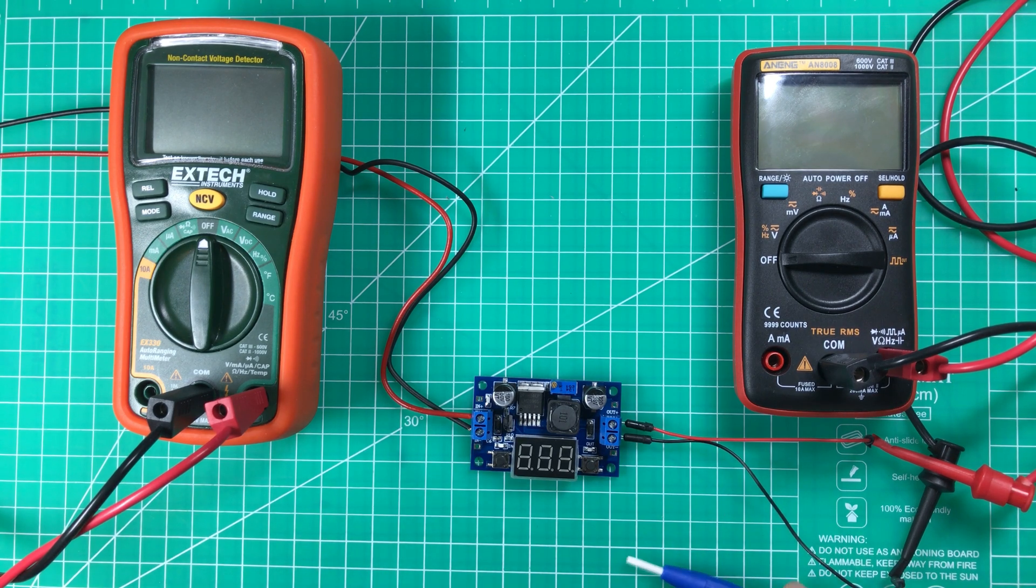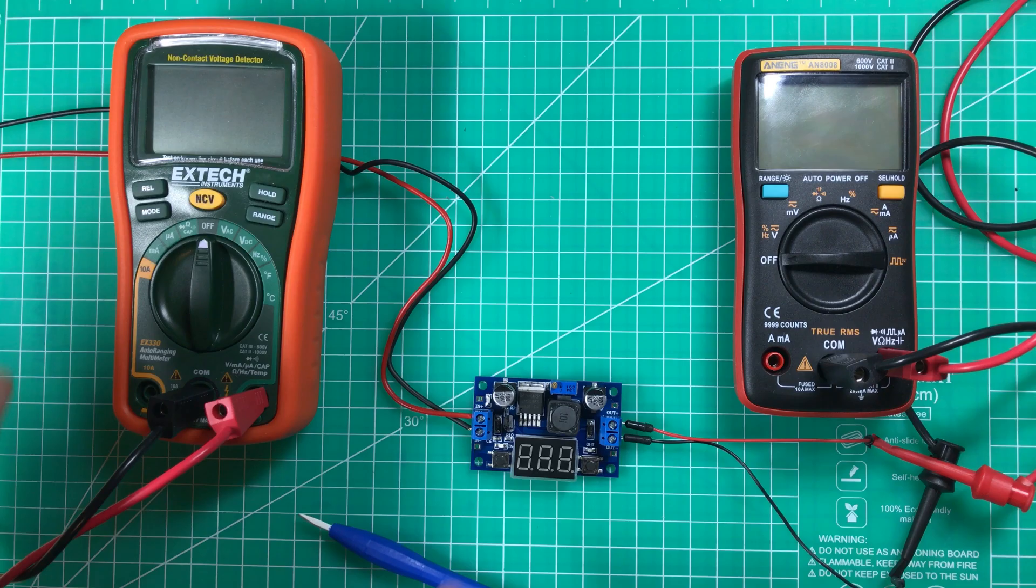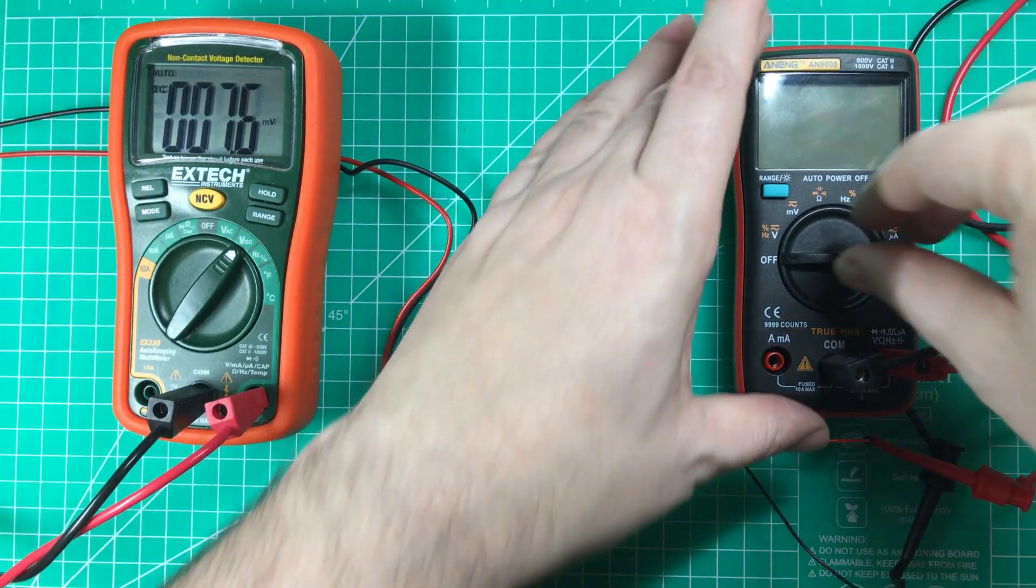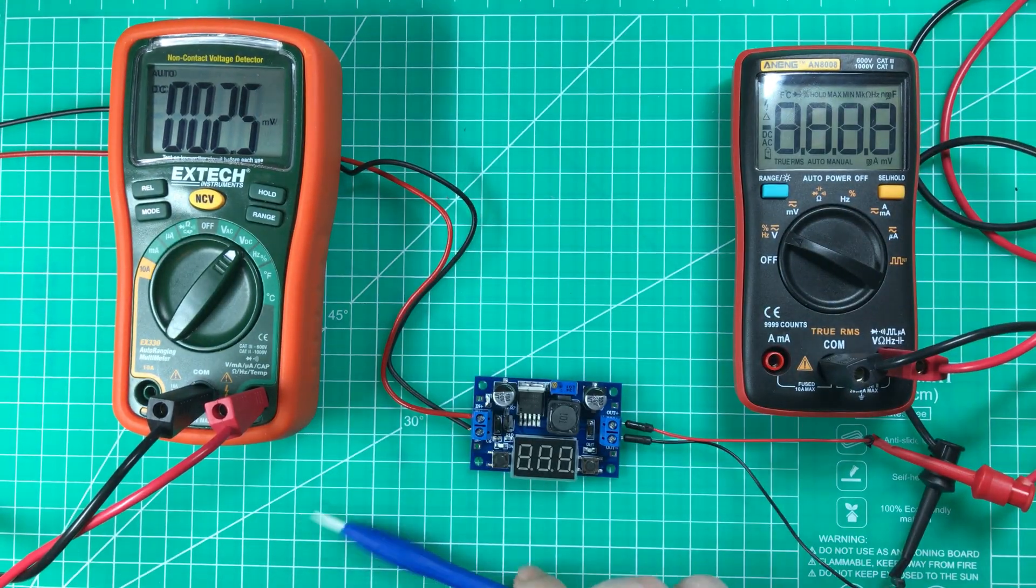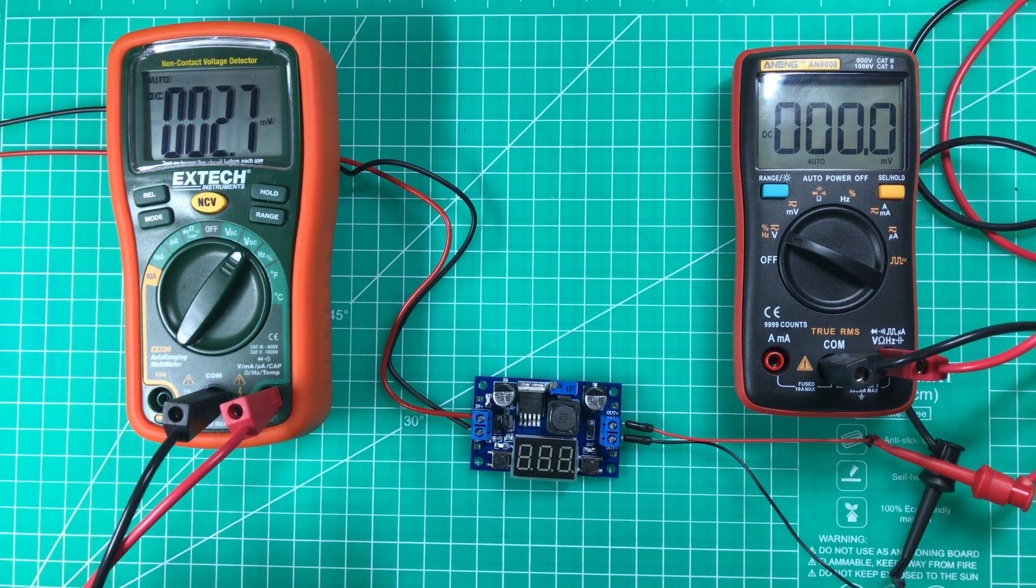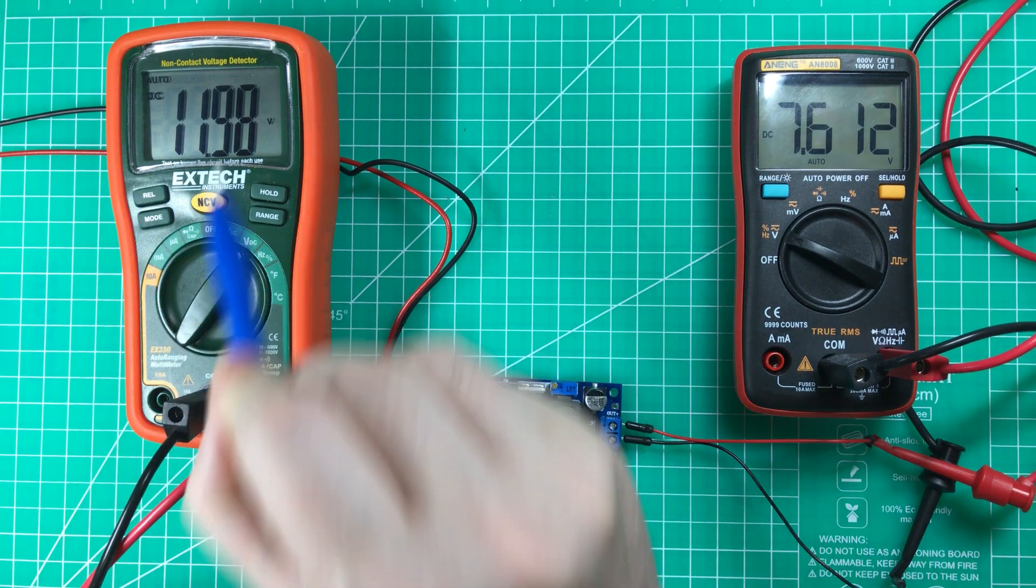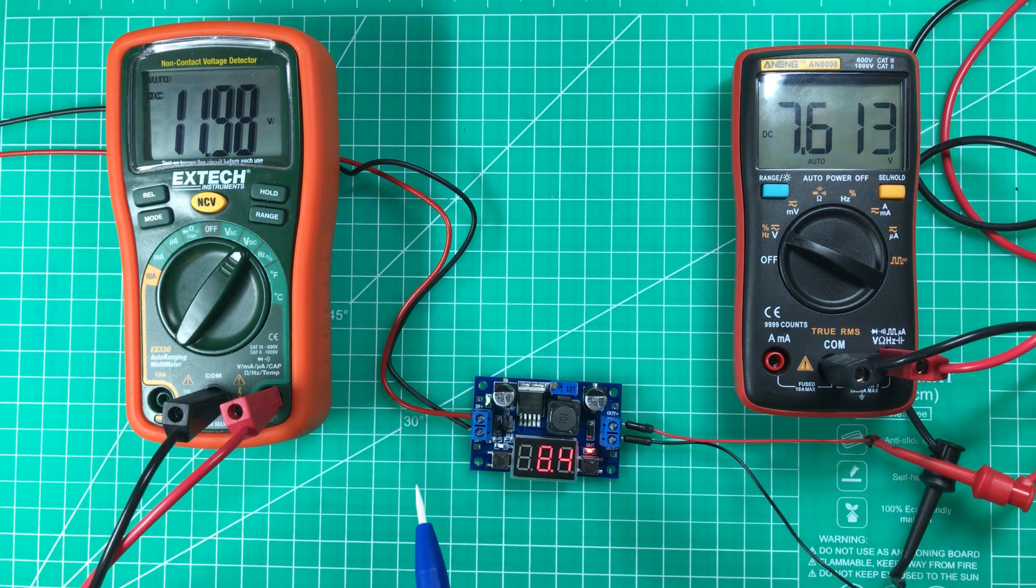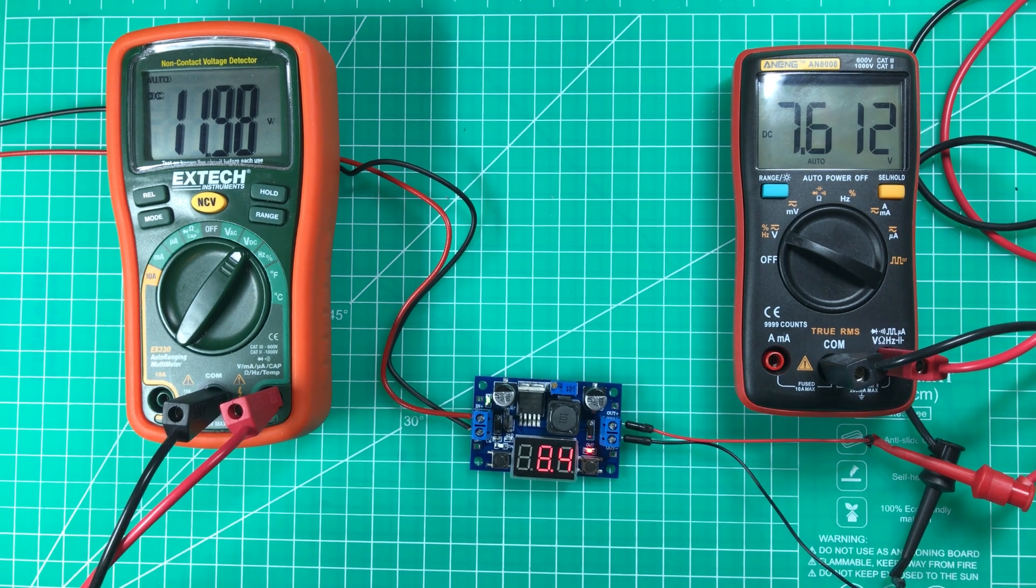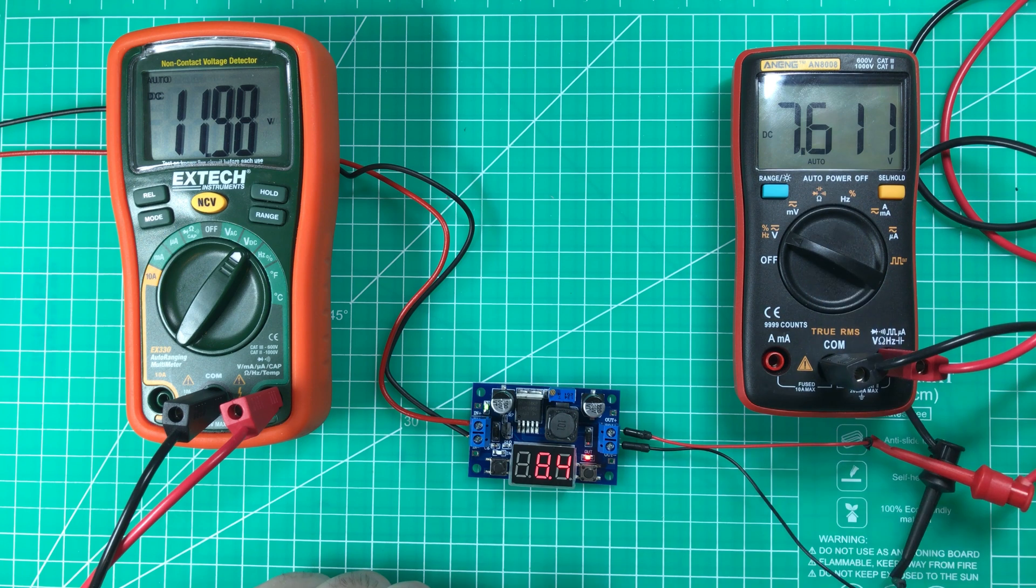So if I apply a voltage here of 12 volts, I'll switch the meters on so you can see what's happening. At the moment you can see that there's 12 volts going in from my bench power supply, it's saying 11.8 but close enough to 12, and coming out is 7.6 volts.